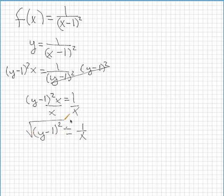And then what we need to do is square root both sides. And when we square root here, this goes away so it becomes y minus 1, and then this side is actually going to be plus or minus 1 over x.